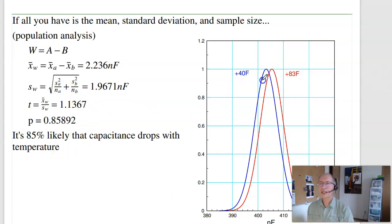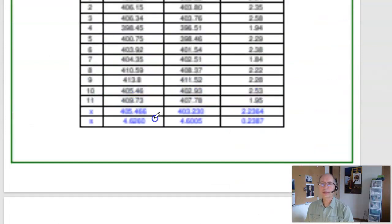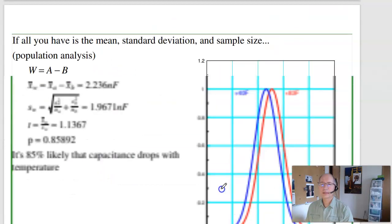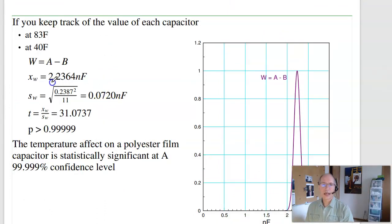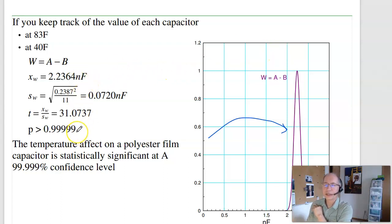If I look at each individual capacitor and take the paired difference, the mean change is 2.2 nanofarads with a standard deviation for the population of 0.07. The t-score is 31 — a huge number. There is a big difference between 83°F and 40°F. I can definitely see it. Again, the question of whether that's significant is different from whether it's statistically significant. Statistically significant says there's a huge difference between the two. Whether two nanofarads out of a thousand affects circuit design is a different question.